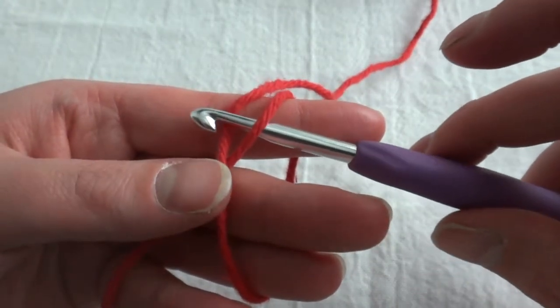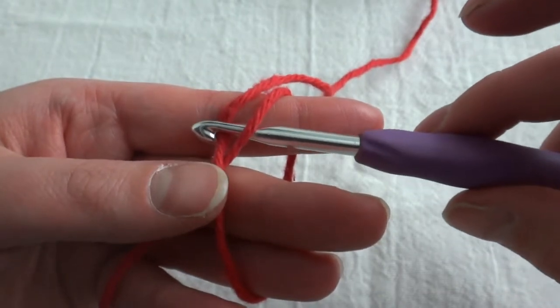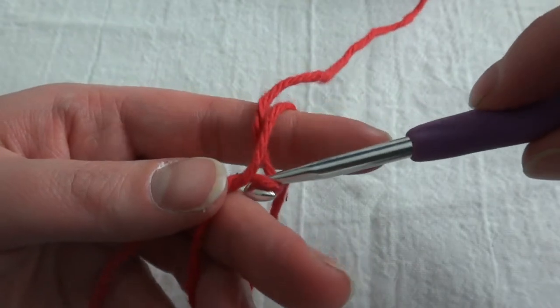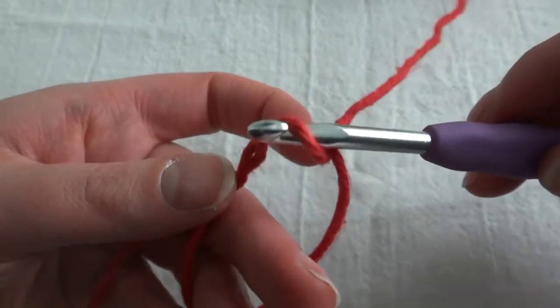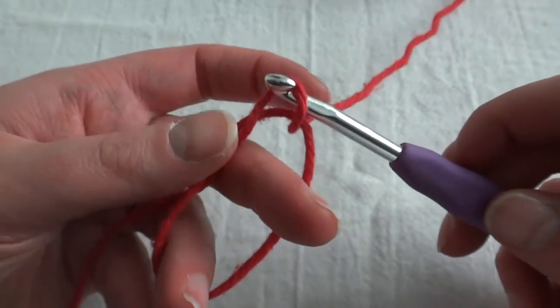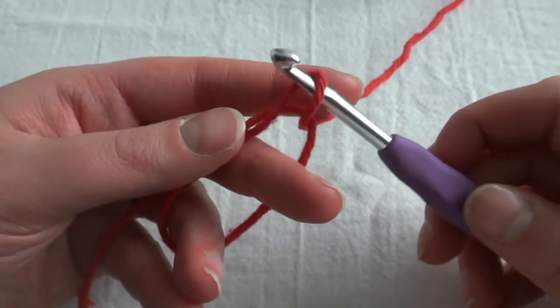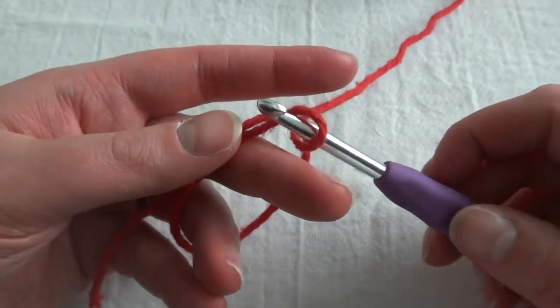You're going to hook the hook on that top strand and then pull it through and release it from your top finger and then now you have this and that's where you would begin to crochet.